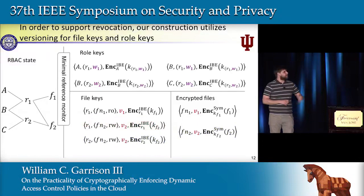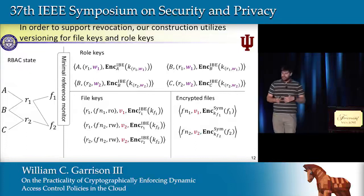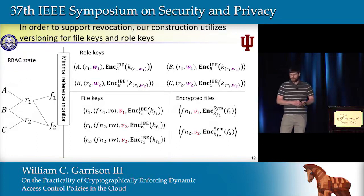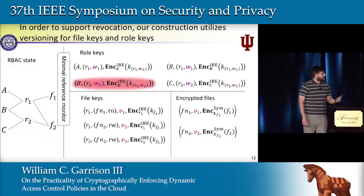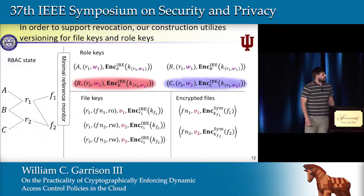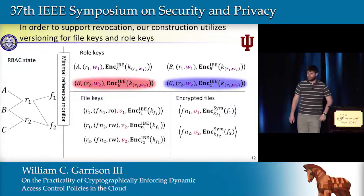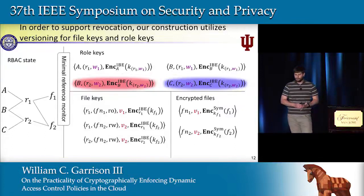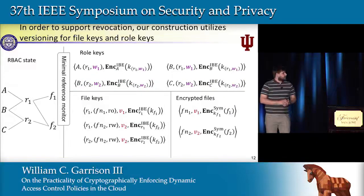We use a similar versioning system for role identities. Any time we need to remove a user from a role, we generate a new version of the role identity and corresponding private key, and distribute it only to the remaining members. For example, to remove user B from role R2, we upload a new version of the role identity private key encrypted only to user C, the sole remaining member of that role.